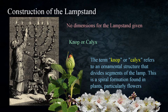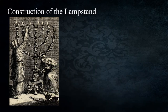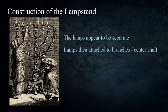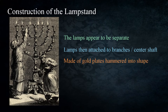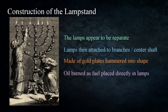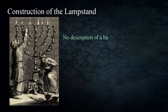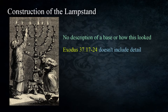Another interesting aspect is that the lamps themselves appear to be made separately and then attached to the branches of the central column. The entire lampstand was made from gold plates hammered into shape and smoothed together. The seven lamps were fitted to the top of the six branches and the central column, and oil burned as fuel would have to be placed directly in the lamps. Finally, there is no mention of a base — we don't know if it had feet or a wide base at the bottom. None of this is included in the initial description nor in the record of its creation by Bezalel in Exodus 37:17–24.